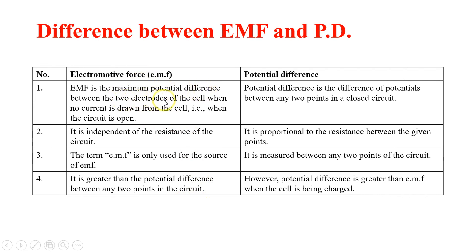Now, the difference between electromotive force and potential difference: EMF is the maximum potential difference between the two electrodes of a cell when no current is drawn — that is, when the circuit is open. Potential difference is the difference of potentials between any two points in a closed circuit, and it is independent of the resistance of the circuit.